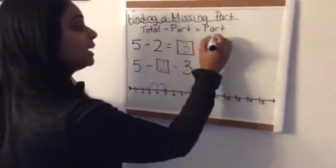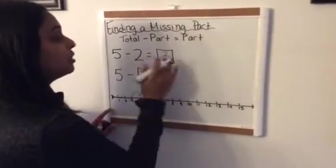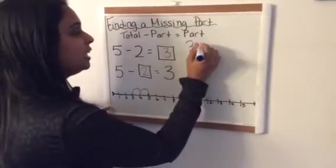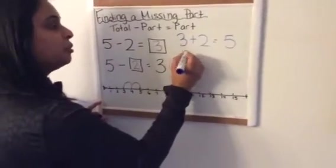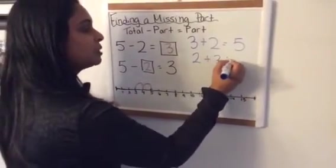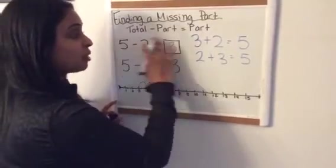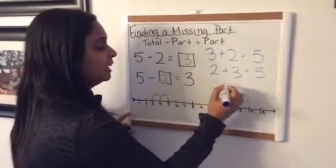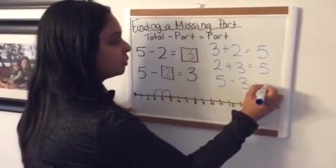So I can write out, I can think of the rest of my fact family. Now there's two adding sentences that I can write using the same three numbers, and that's three plus two equals five. I can also do two plus three equals five. And then here, the other subtraction sentence that would go along with this fact family that I've just done is five take away three equals two.